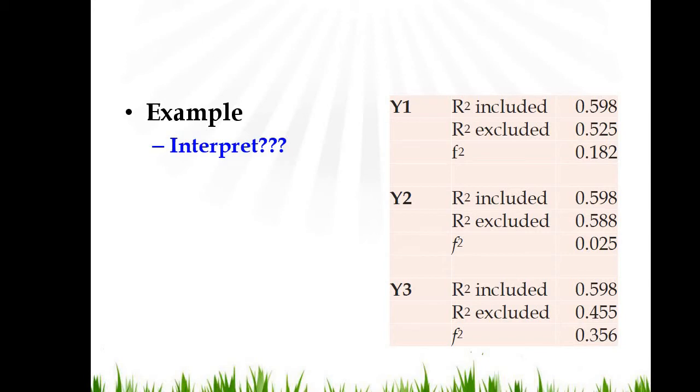Let's take the example. Here we have three examples. In this case, when we included the exogenous variable, we got R-square 0.598, and when we excluded it, we got R-square 0.525. When we calculated f-square, we found it is 0.182.